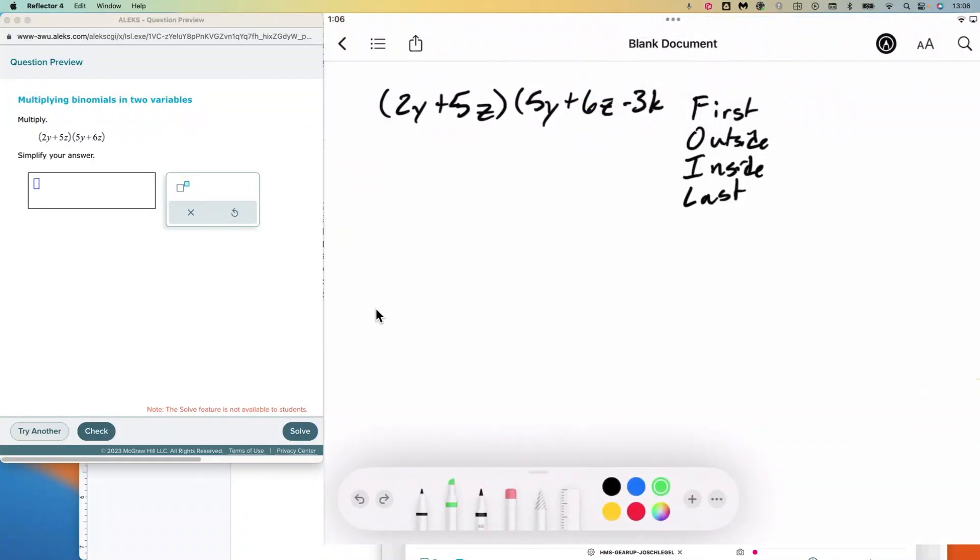And so what we need to be mindful of is that tricks like FOIL or monkey face will work if you have a two-by-two.